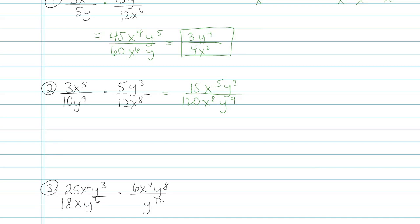So what I need to do is reduce 15 over 120, which is 1 over 8 for my integers. Then for the x's, I have 5 on top and 8 on the bottom. And the y's, I have 3 on top and 9 on the bottom. Here's the final answer.